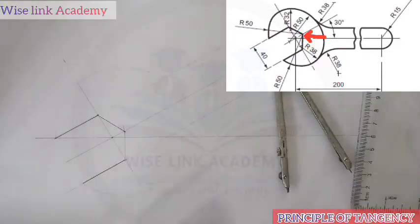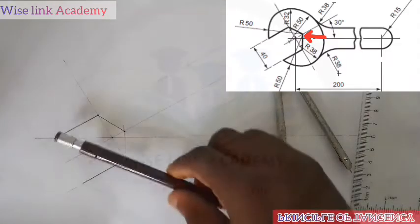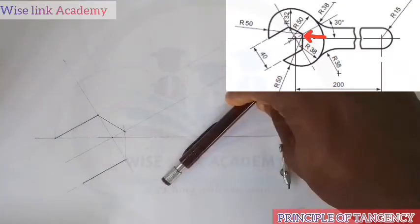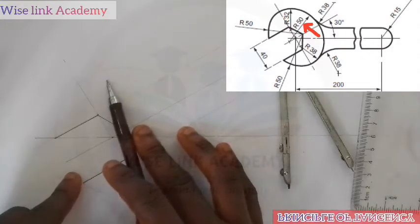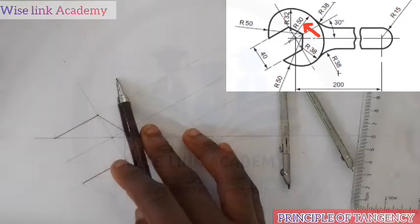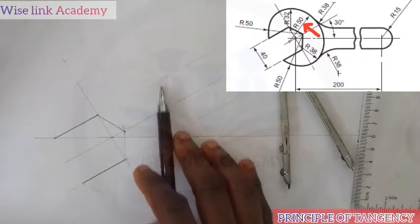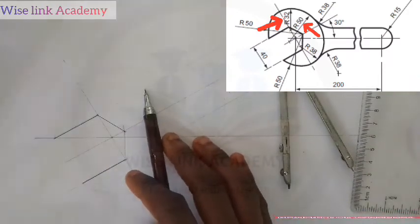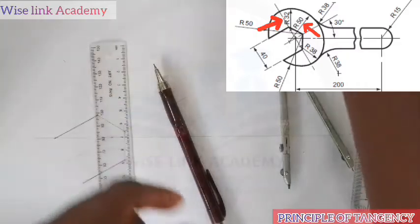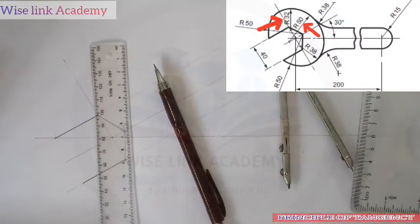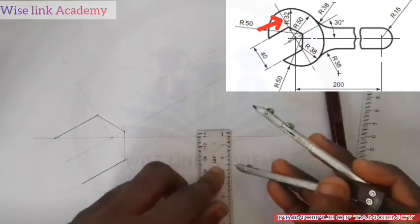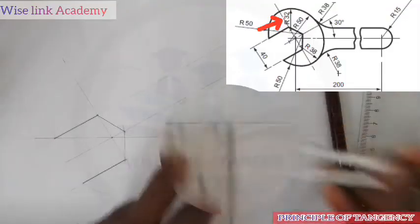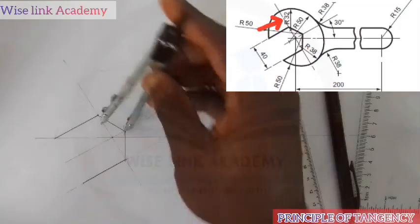My next task is to observe: this is 50, and 50 downwards. If you observe closely, there is an arc of 30, an arc of 32 somewhere here, such that there is an arc of R50. So I will simply subtract 32 from 50. If I subtract, I will have 18. So I will measure 18 — 1.8 on my ruler — and at this point I will strike an arc this way.